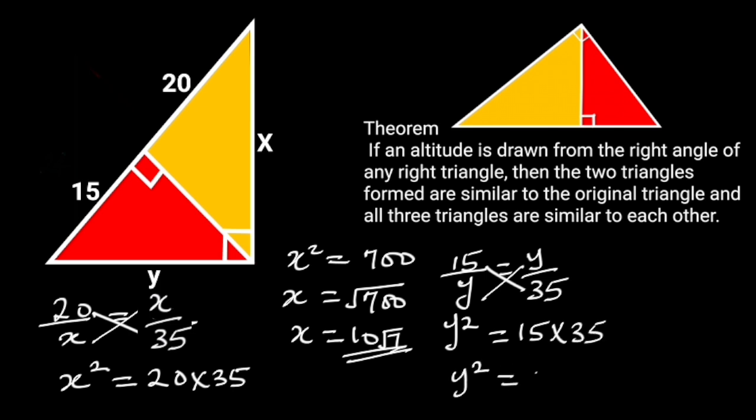15 times 35 is 525. Taking the square root of both sides will give us y is equal to square root of 525, which is equal to 5 root 21.